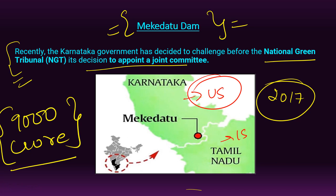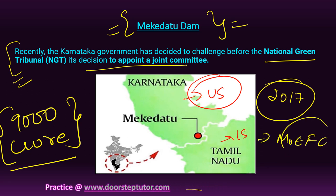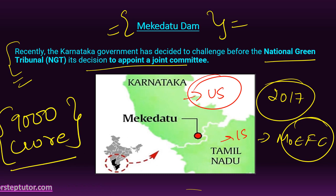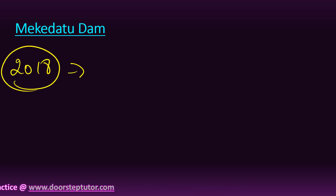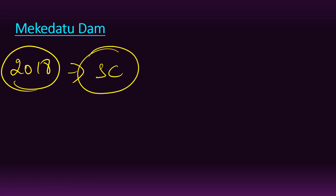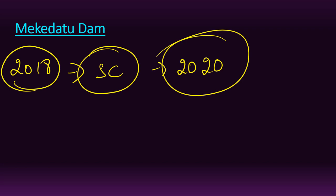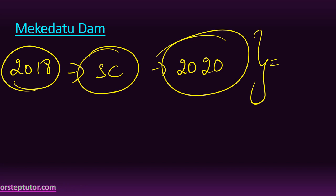The project also received approval from the erstwhile Ministry of Water Resources for the detailed project report, and a response was awaited from the Ministry of Environment, Forest and Climate Change — because 63 percent of the forest area of the Kaveri Wildlife Sanctuary will be submerged by this project. In 2018, Tamil Nadu moved the Supreme Court against the project, arguing that even if Karnataka built it, it would not affect the flow of water to Tamil Nadu. Tamil Nadu reiterated its opposition at the Kaveri Water Management Authority meeting in 2020.